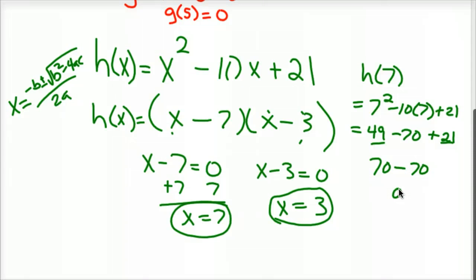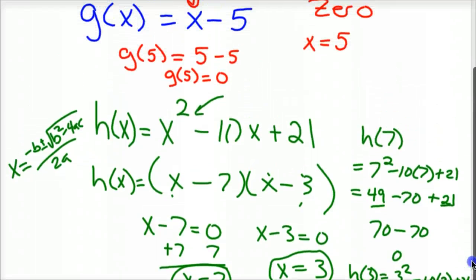The same would work with 3. h(3) would be 3² - 10(3) + 21. That would be 9 - 30 + 21. 9 - 30 is -21, plus 21 is 0. So 3 and 7 are the zeros. Notice there's two of them. I know that there's only two of them. The highest power is x². We had two roots.